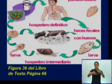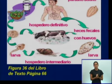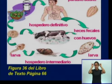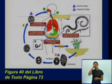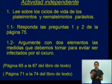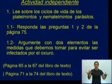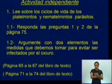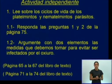Vean la presencia de un hospedero intermediario y un hospedero definitivo. Hay elementos como las verduras, el agua, y en el caso del hospedero definitivo como una vaca, que pueden causar daños al hombre porque ahí pueden encontrarse los quistes de estos animales que después pasan al interior del hombre y le dañan su salud. Aquí vemos el ciclo de vida de la lombriz intestinal: no hay presencia de un hospedero intermediario. Pueden ver esta característica en la figura 40 del libro de texto en la página 72. Les dejo una actividad independiente sobre los ciclos de vida de estos platemintos y nematemintos parásitos, en las páginas 65 a la 67 y 71 a la 74.